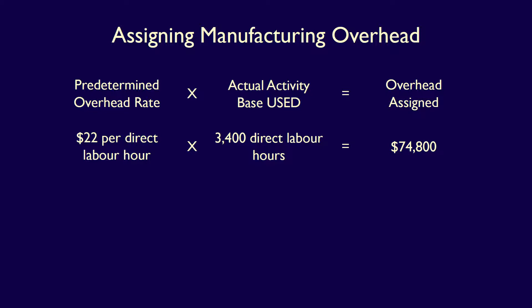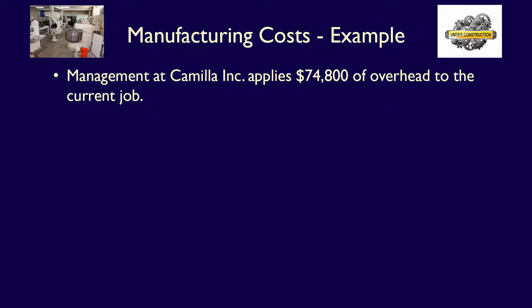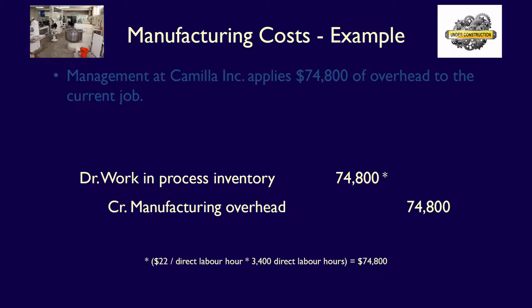This $74,800 is the estimate of what Camilla must have used in order to produce this order of cakes. Management at Camilla Inc. must now apply $74,800 of overhead to the current job by recording an entry in their accounting system. We debit work-in-process inventory for $74,800, adding it to the cost of manufacturing these cakes, and credit manufacturing overhead for the same amount, as this is the estimate of manufacturing overhead used in this job.